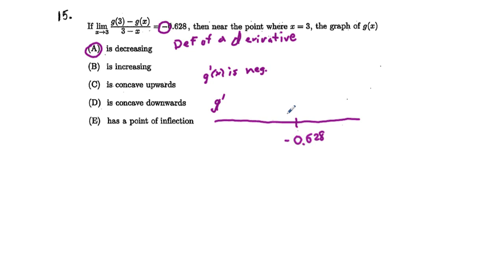We don't know what happens to the left of negative 0.628 or to the right of negative 0.628. We know at negative 0.628, the underlying function is decreasing. So that is our answer.